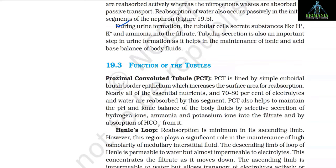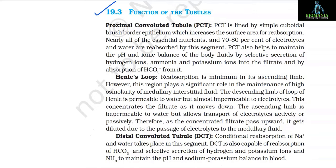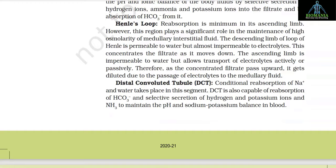Section 19.3: Functions of the Tubules. The proximal convoluted tubule (PCT) is lined by simple cuboidal brush-border epithelium, which increases the surface area for reabsorption. Nearly all essential nutrients and 70 to 80 percent of electrolytes and water are reabsorbed by this segment. PCT also helps maintain the pH and ionic balance of body fluids by selective secretion of hydrogen ions, ammonia, and potassium ions into the filtrate, and by absorption of HCO₃⁻ ions from it. Henle's loop: reabsorption is minimal in its ascending limb, but this region plays a significant role in maintaining high osmolarity of medullary interstitial fluid.